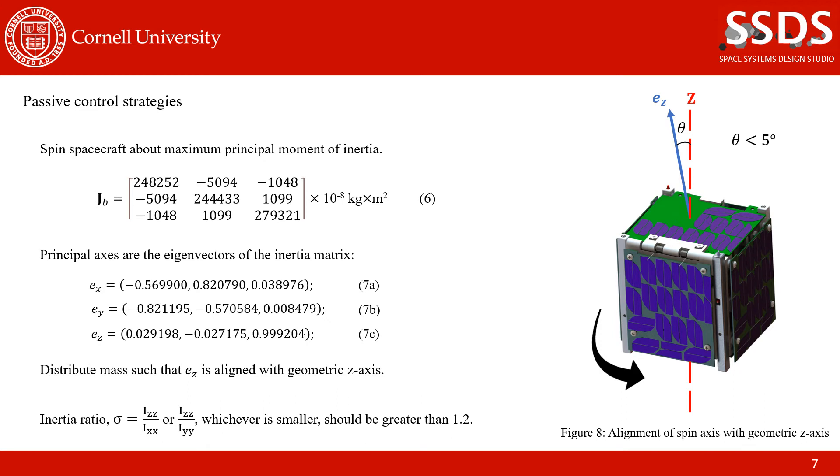Moving on to the control techniques used, we'll start with passive control strategies. With the goal of a stable spin about the maximum principal moment of inertia, we specifically weighted the CubeSat such that this spin axis is as close as possible to the door axis, the geometric z axis. By taking the eigenvectors of the inertia matrix, you can see that the ez component is very close to 001, about 3 degrees away. Lastly, we want to ensure that the inertia ratio is at least 1.2.